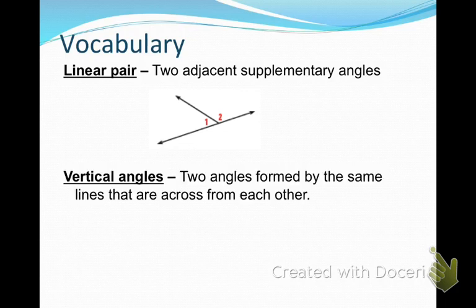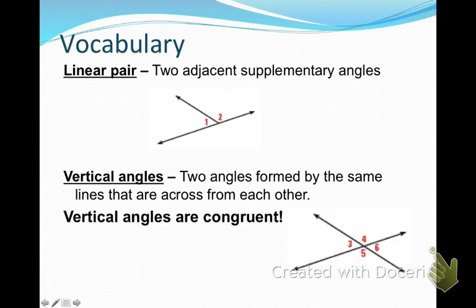We also have vertical angles — you should have learned about those in seventh grade. These are two angles that are formed by the same lines and are across from each other. So if you take two lines and form an X, you have formed two pairs of vertical angles. One very important thing about vertical angles is that they are always congruent, meaning they have the same measurements.